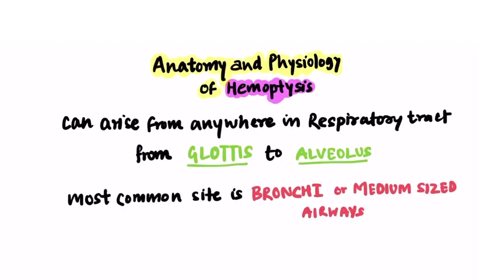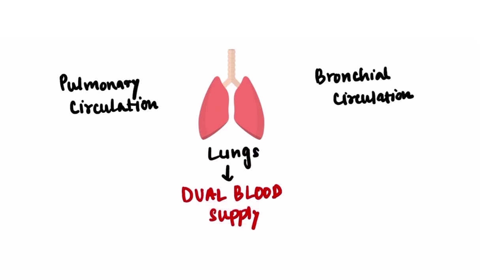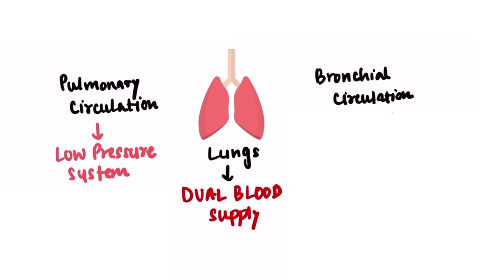Now let us learn about the anatomical and physiological aspects of hemoptysis. Hemoptysis can arise from anywhere in the respiratory tract, from the glottis to the alveolus. The most common site is the bronchi or medium-size airways. Lungs have a unique anatomy and physiology as they have dual blood supply — from pulmonary circulation and from bronchial circulation. The pulmonary circulation is a low-pressure system.